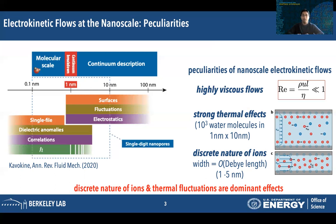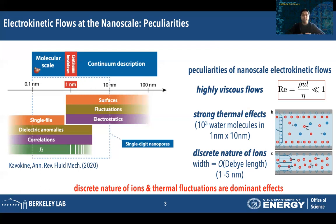At these scales, any continuum description of the fluid has to be supplemented with a statistical mechanical description of the thermal effects. And lastly, the scales that we are interested in are comparable to the Debye length of these charged fluids. The Debye length is basically the screening length — if you have an ion suspended in a fluid next to a charged surface, ions of opposite charge diffuse and migrate towards the charged surface, creating a screening layer. For many fluids in practical applications, the Debye length is of the order of 1 to 5 nanometers. As a consequence, we need to treat ions as discrete entities rather than a continuum species, and it's these discrete nature of ions and thermal fluctuations in the fluid that are the dominant effects we account for in our simulation method.